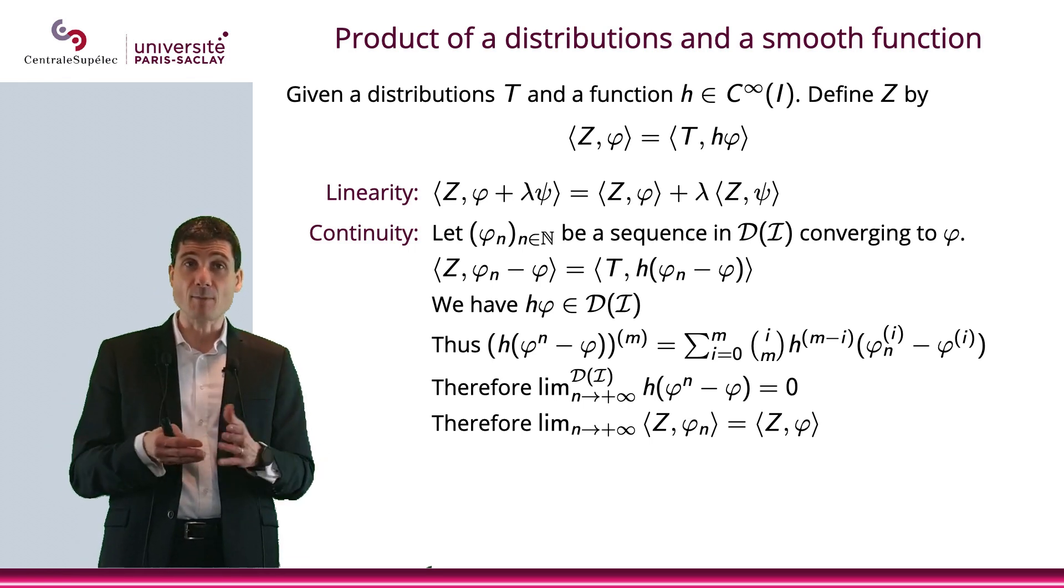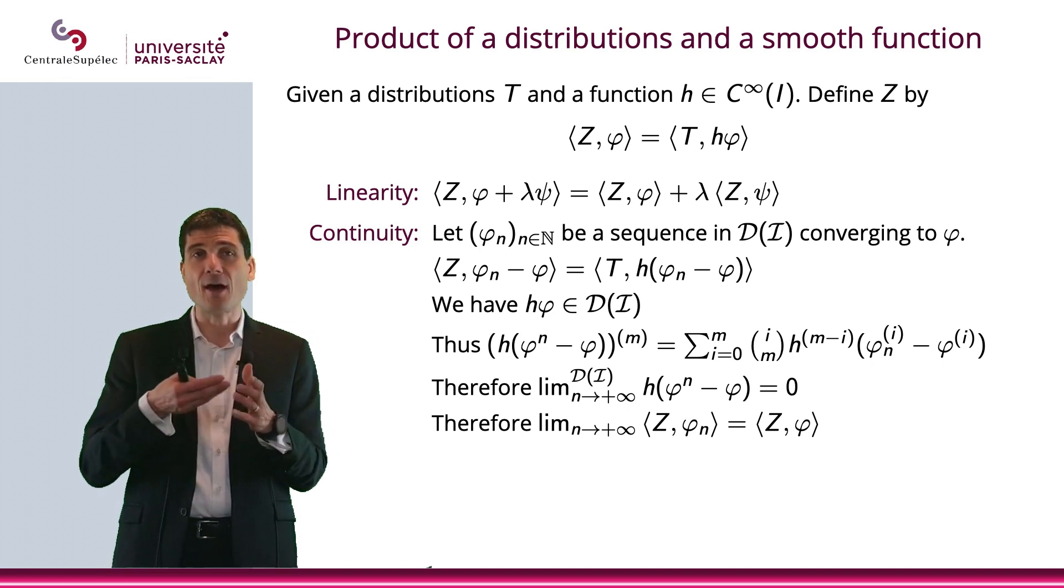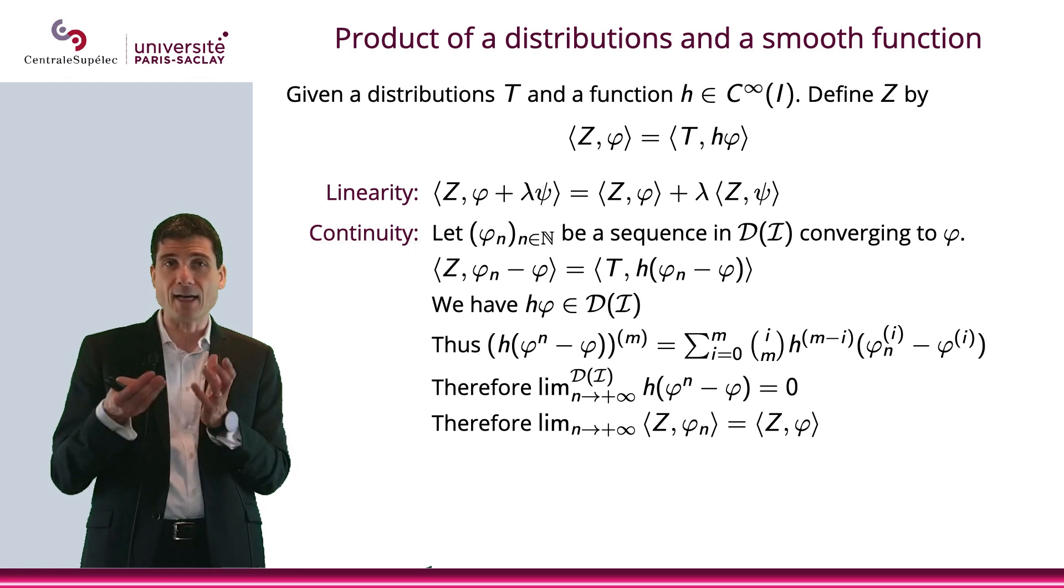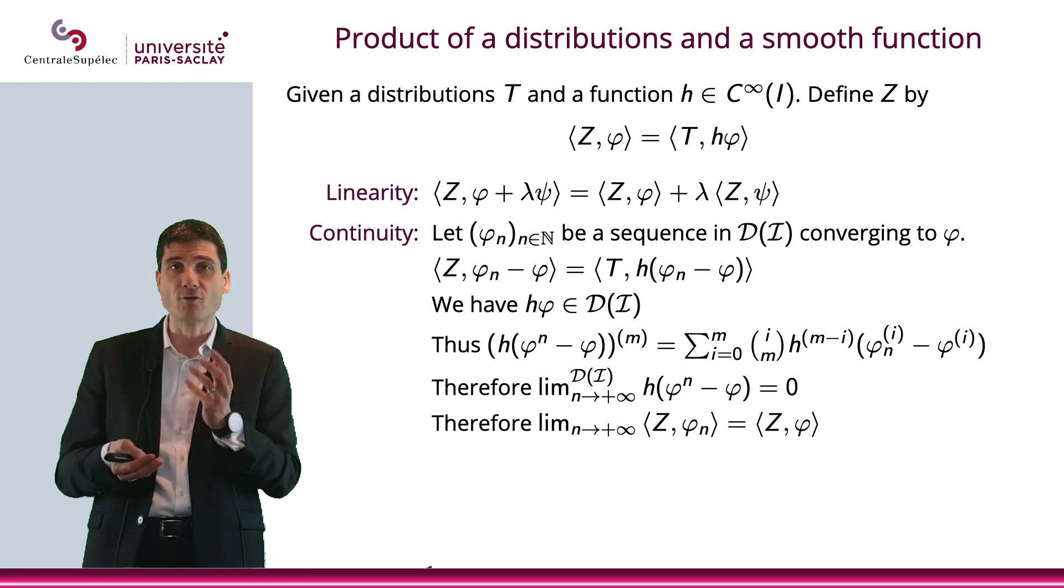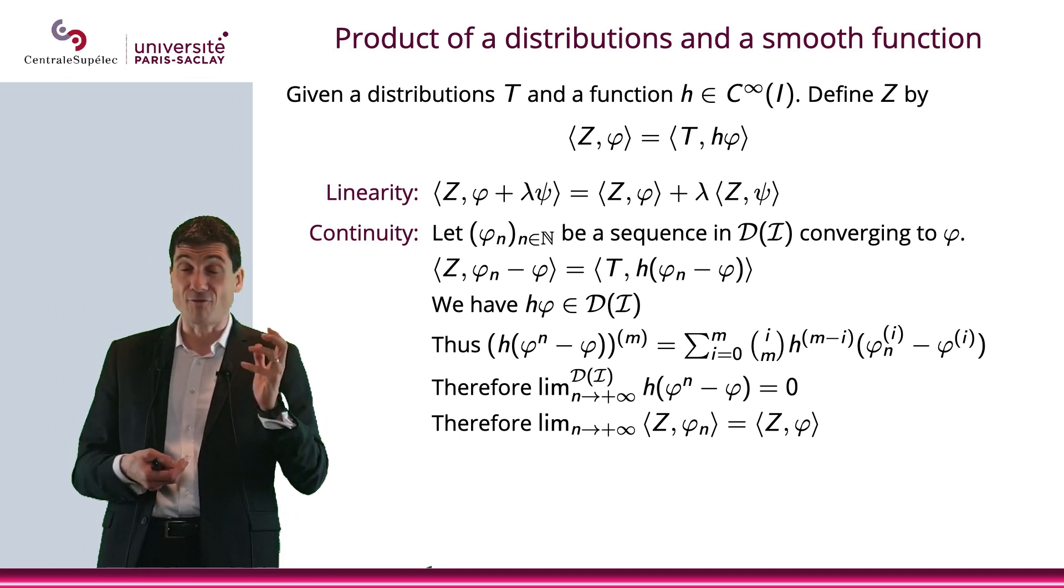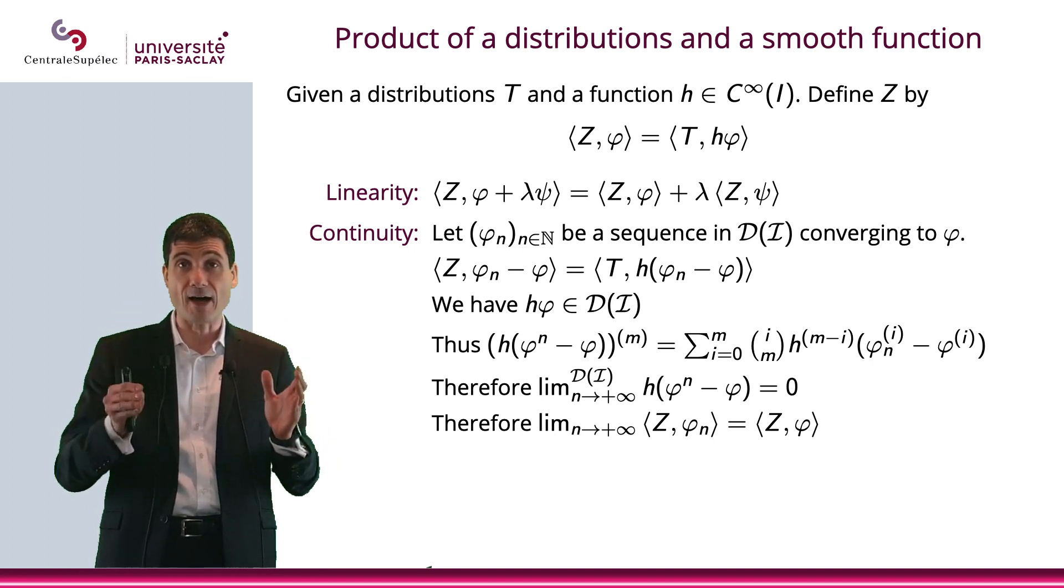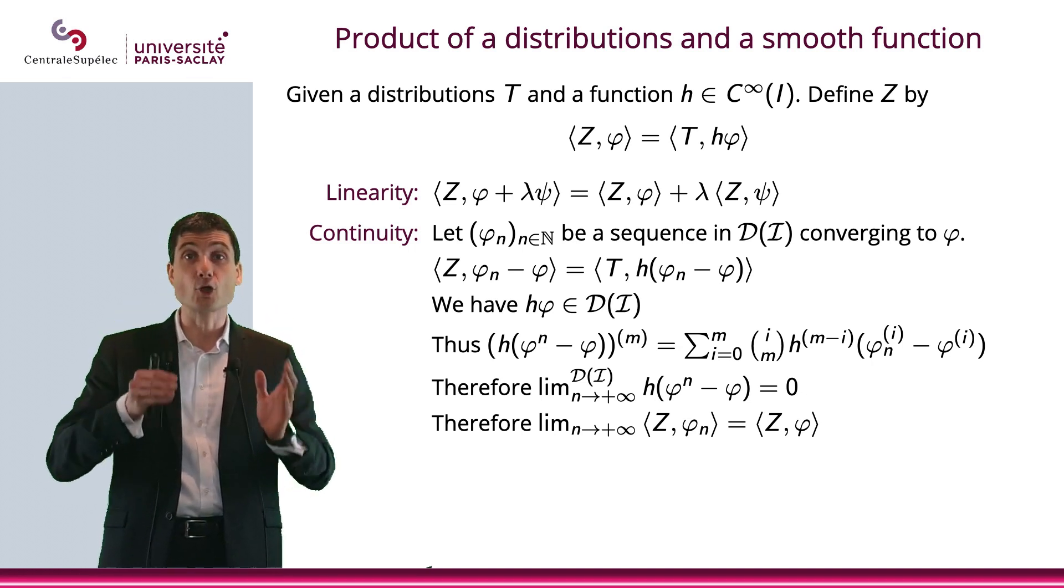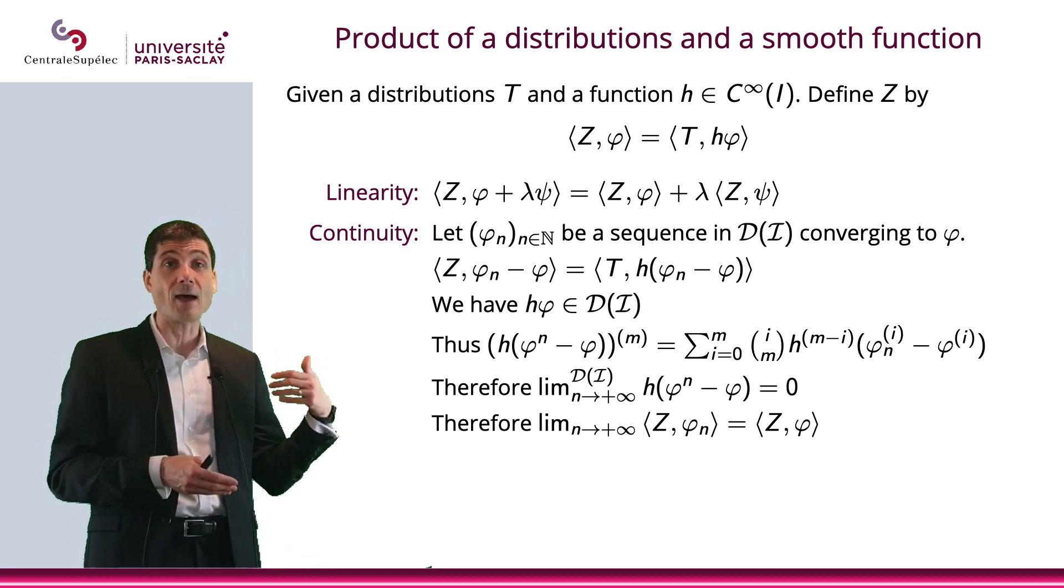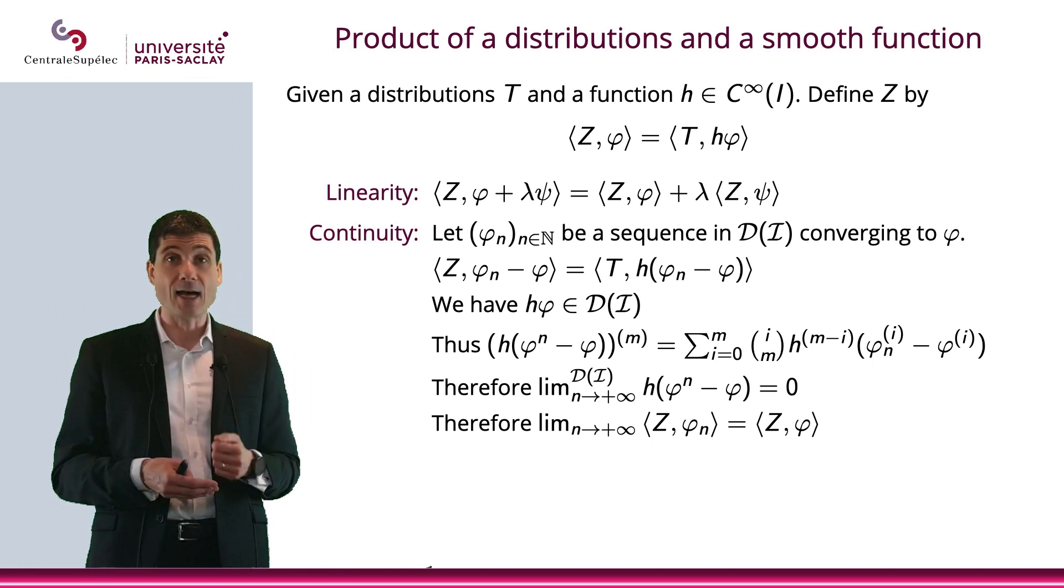Now, if you look at the n-th derivative of h times (φₙ minus φ), then that will be a sum of some coefficients with the (m-i)-th derivative of h and the i-th derivative of (φₙ minus φ). And we know that we have convergence of the sequence φₙ in D, which is a very strong convergence because all the derivatives of φₙ will converge uniformly to φ.